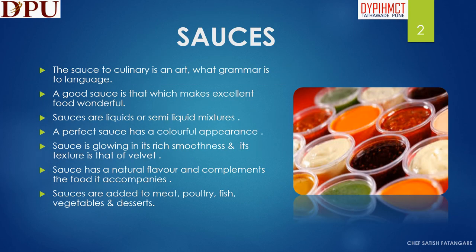In this slide we will discuss about what is a sauce. The sauce to culinary is an art, what grammar is to language. A good sauce is that which makes excellent food wonderful. Sauces are liquids or semi-liquid mixtures. A perfect sauce has a colorful appearance, glowing in its rich smoothness, and its texture is that of well-set. Sauce has a natural flavor and complements the food it accompanies.